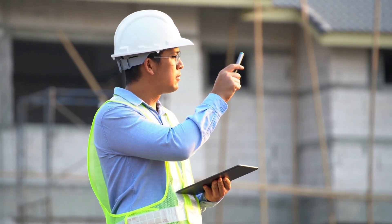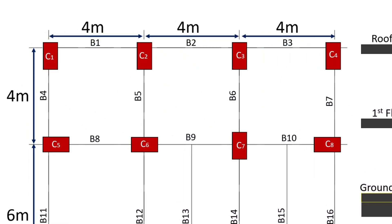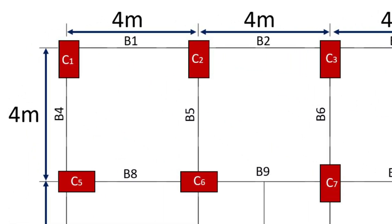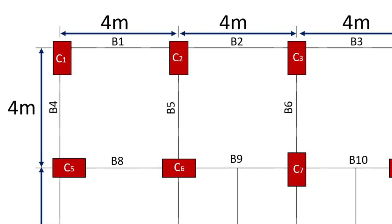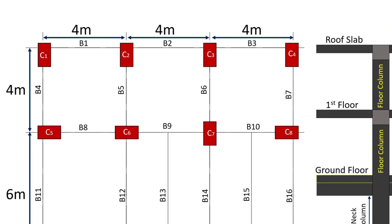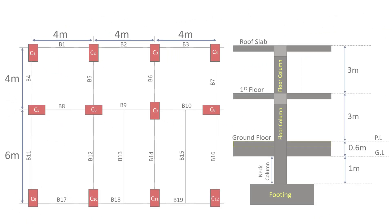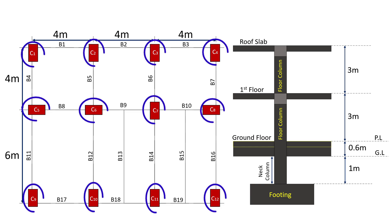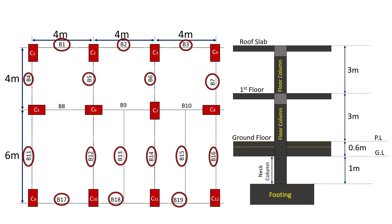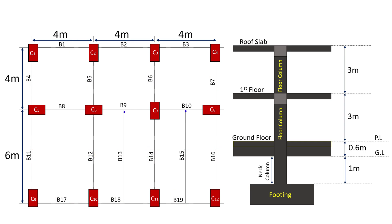In this video, we will discuss how to calculate the load on a column which is placed at the corner of a building by the approximate method. We have a two-story building with 12 columns numbered from C1 to C12 and 19 beams numbered from B1 to B19, out of which B13 and B15 are secondary beams.